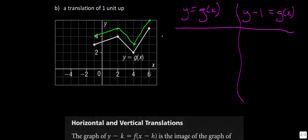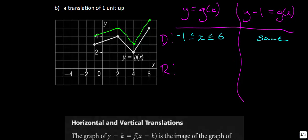For domain and range: the domain should not have changed for either function. x is still less than or equal to 6 and greater than or equal to negative 1, since we just moved the graph up. The range has changed though — the highest value before was 5, lowest was 2, and we've moved 1 up, so we simply add 1 to each: y is between 3 and 6.